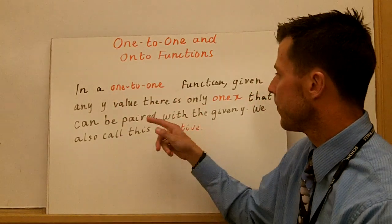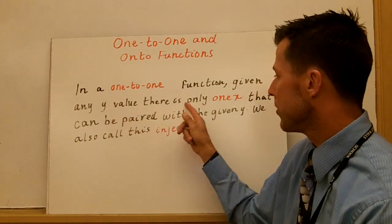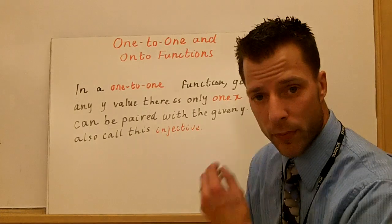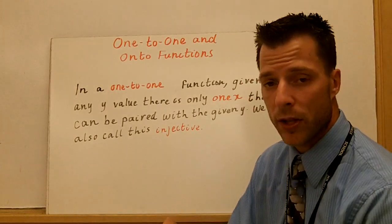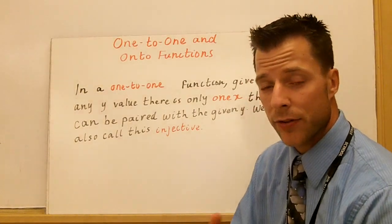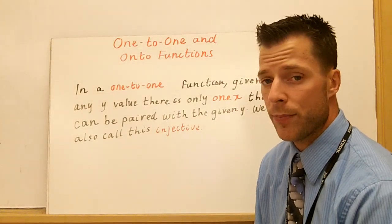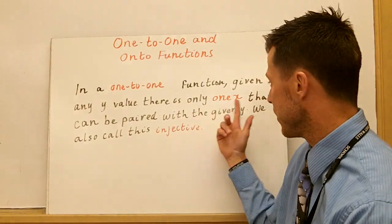In a one-to-one function, given any y value, there is only one x value. So meaning, if you have two elements in your domain that are not equal, then their outputs can't be equal. That's what this is really saying.